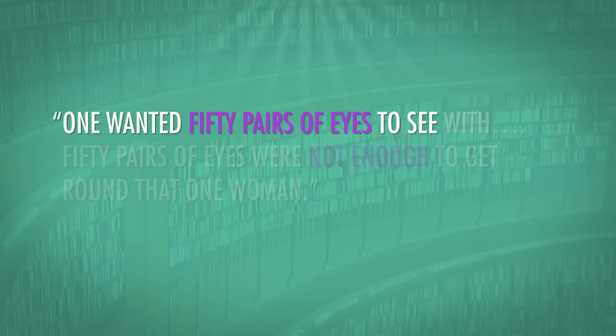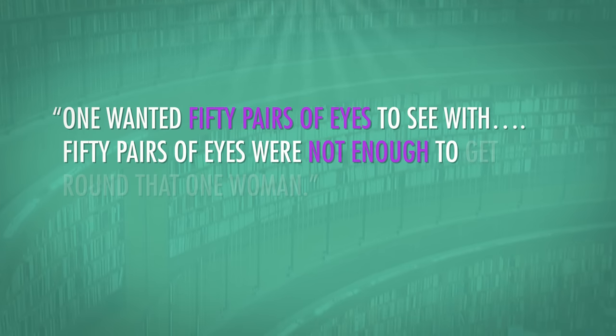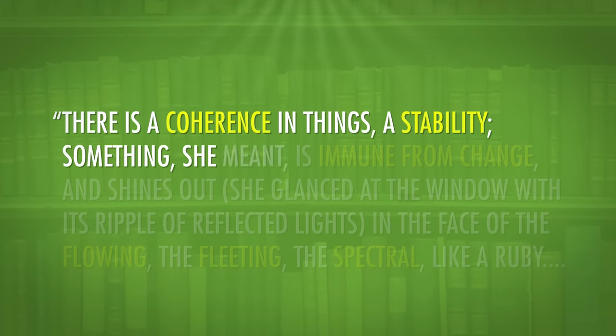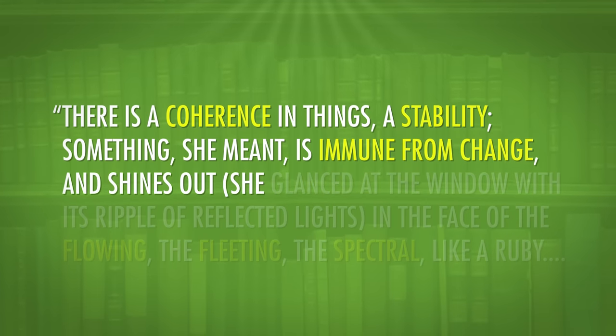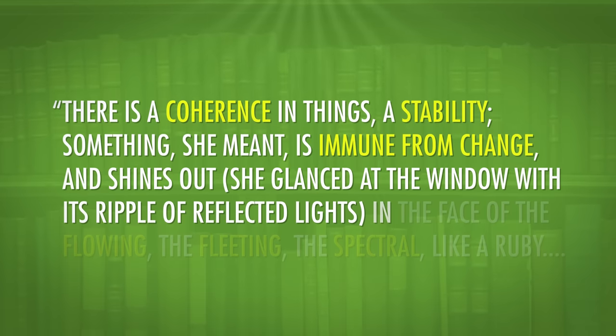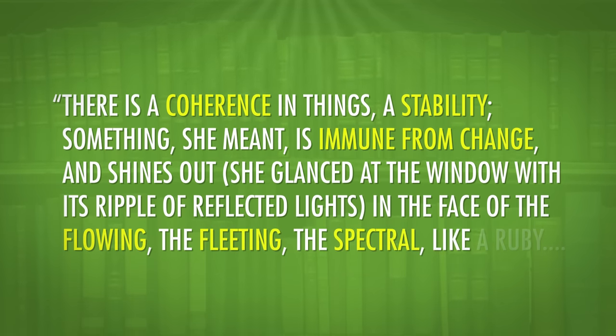Also, the novel argues that this constantly shifting perspective is the only way to really understand the characters and their world comprehensively. In a Lily passage about Mrs. Ramsay, we read: One wanted fifty pairs of eyes to see with. Fifty pairs of eyes were not enough to get round that one woman. The novel also explores time and what it does to memory and houses and life. What is ephemeral and what is eternal. What we lose to time and the ways that we can or something of us can endure. A lot is lost to time in the story, but there are a few moments in which time seems to be suspended. The main one is at that beef stew dinner party when Mrs. Ramsay finally achieves a sense of peace. She feels there is a coherence in things, a stability, something, she meant, is immune from change and shines out. She glanced at the window with its ripple of reflected lights in the face of the flowing, the fleeting, the spectral, like a ruby.